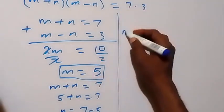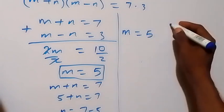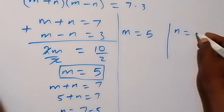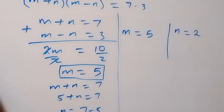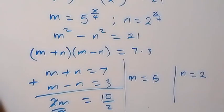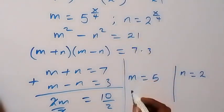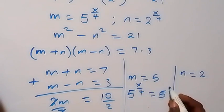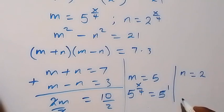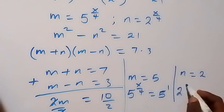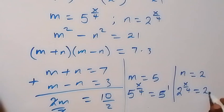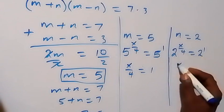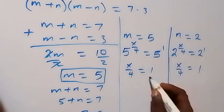So we have m equals to 5 and n equals to 2. Then recall that we represented m as 5 raised to power x over 4, so it means m will now be 5 raised to power x over 4, which is equals to 5, also 5 raised to power 1. Then same way here we have n to be 2 raised to power x over 4, which is 2 raised to power 1. Here we have same base, so x over 4 equals to 1. Same thing here, x over 4 equals to 1.